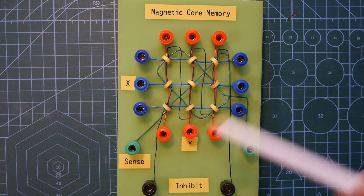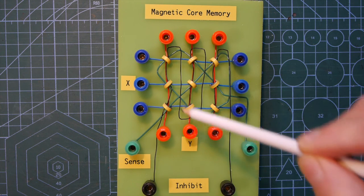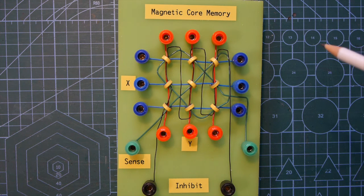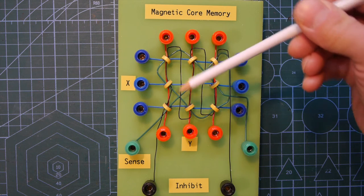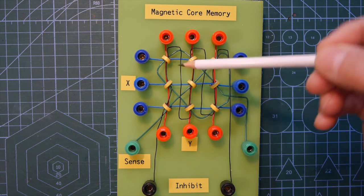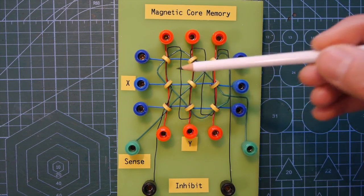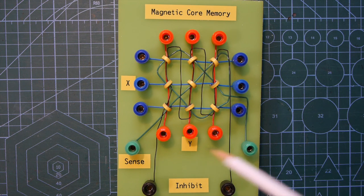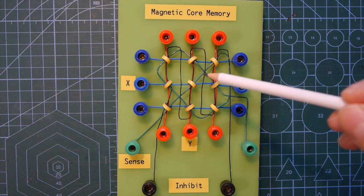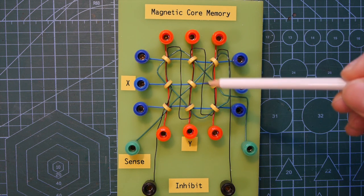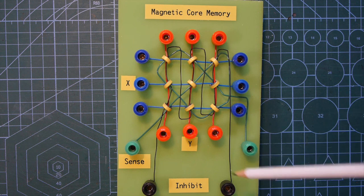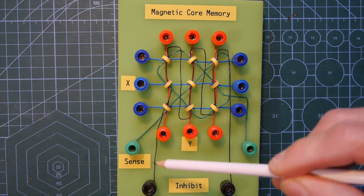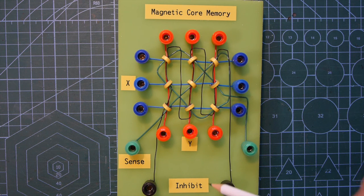Now, I've added two other wires. There's a green wire that zigzags around the cores and passes through each core once, and it tries to keep an angle away from the red and the blue wires, so it doesn't pick up their magnetic field. And this is the sense wire that's going to be used to pick up when the magnetism in a core changes.